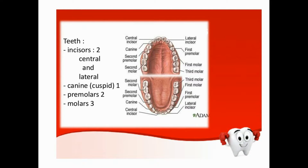Permanent teeth are 32 in total in our mouth. In groups we have two frontal teeth — central and lateral — one canine, two premolars, and three molars, and that is on each side of the mouth.